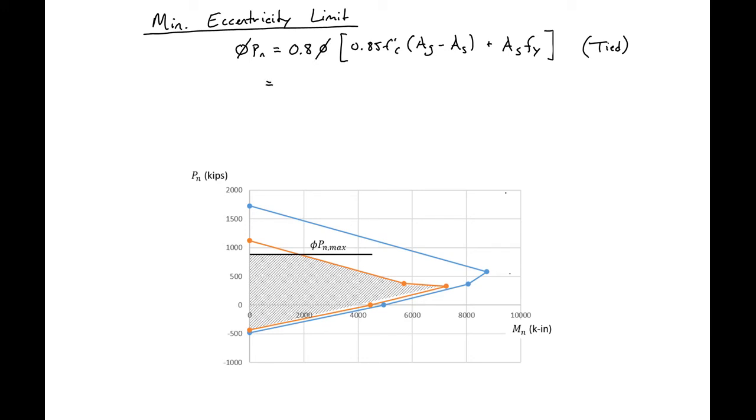For our column we'll have 0.8 times our phi factor 0.65 for compression controlled times 0.85 times 4 ksi times our gross area, which is 15 inches times 25 inches minus 8 square inches. And then all of this plus 8 square inches times 60 ksi. And this will give us our minimum eccentricity limit, phi Pn equal to 898 kips.